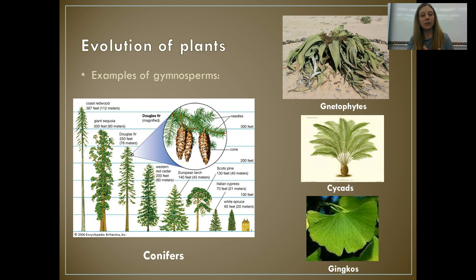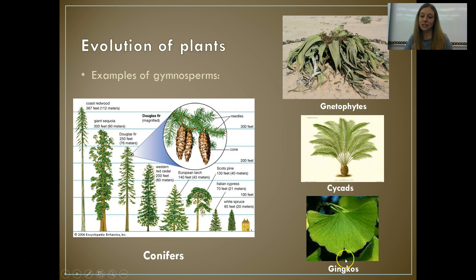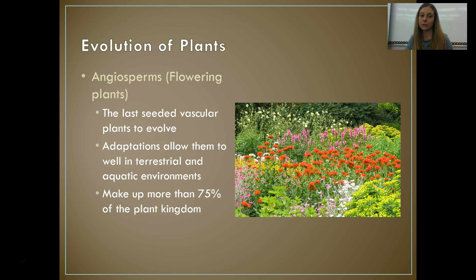Examples of gymnosperms — and there are actually many types — include our conifers (cone-bearing plants), as well as types you may be less familiar with: gnetophytes, cycads, and ginkgos, which you may have heard about. These are all examples of gymnosperms — plants that carry their seeds in cones.